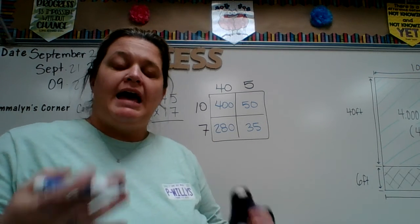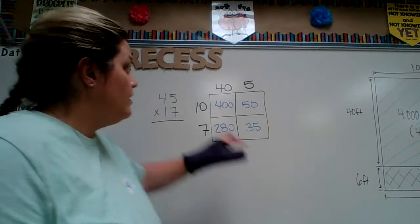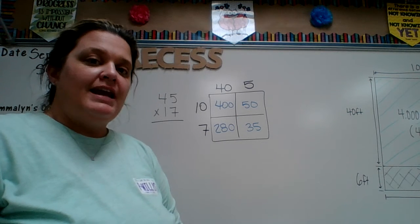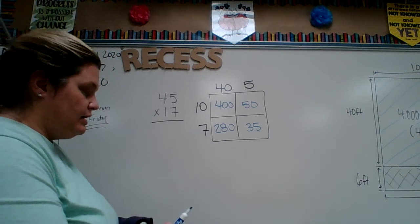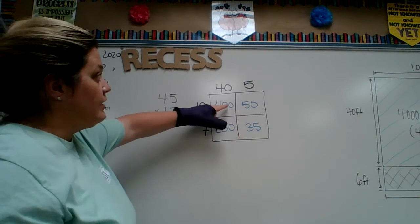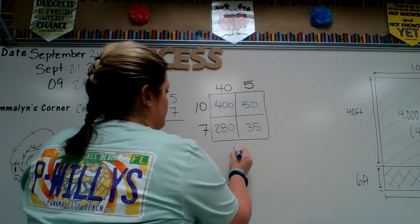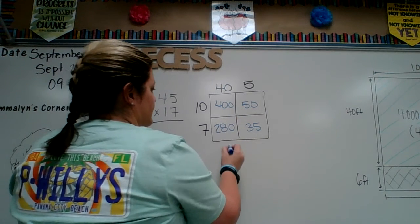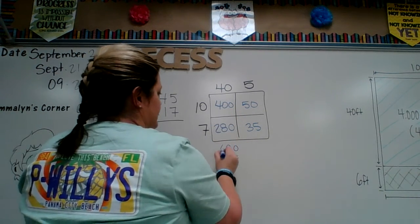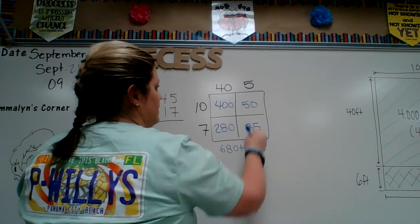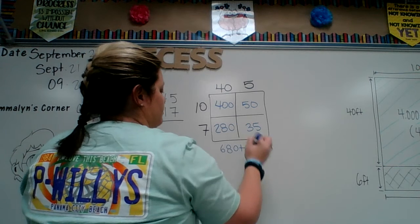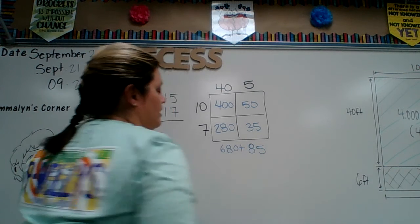Now what we have to do is we have to add the single numbers in the boxes. One way that I do this is I actually keep them as lined up as possible inside the box. So: 0 plus 0 is 0, 0 plus 8 is 8, 4 plus 2 is 6, 0 plus 5 is 5, 5 plus 3 is 8.